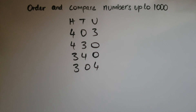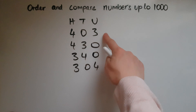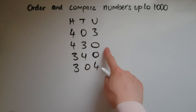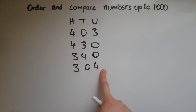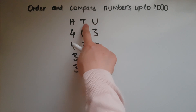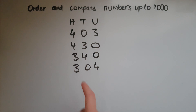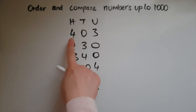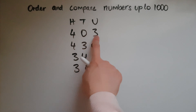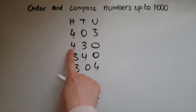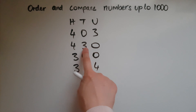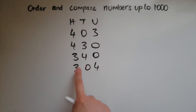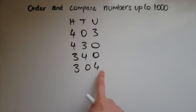In this video we'll learn to order and compare numbers up to 1000. I've put down four different numbers and labelled the units, tens and hundreds to help us. The first number is 403, then we've got 430, 340, and 304.